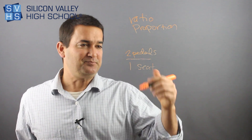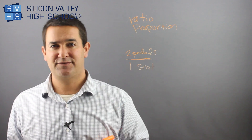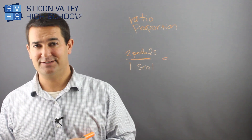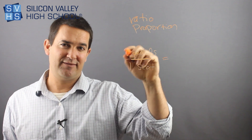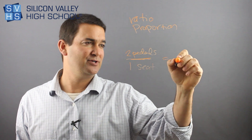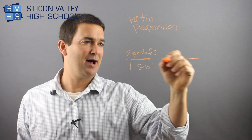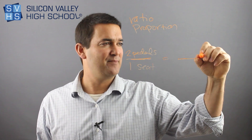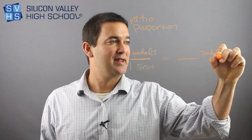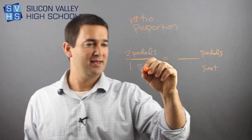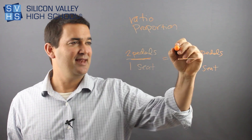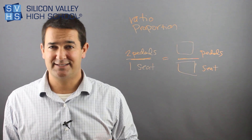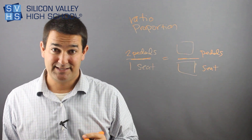They might say we know that there are two pedals for every one seat — how many seats if I have 18 pedals? Whenever you have a word problem like that, you set up two ratios opposite each other with an equal sign and make sure that your units are the same. So if pedals were on top on the left, then pedals go on top on the right. If seats were on the bottom, then seats go on the bottom. I just want to make sure that my units are consistent.